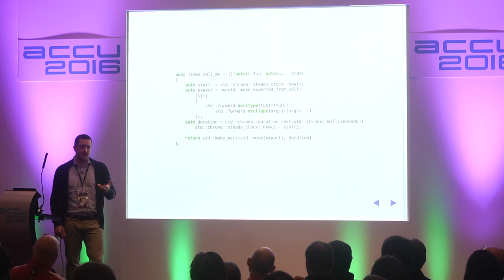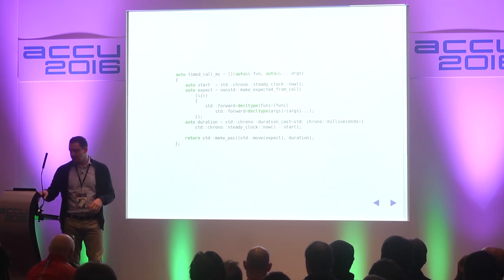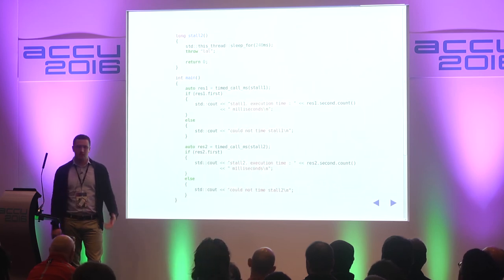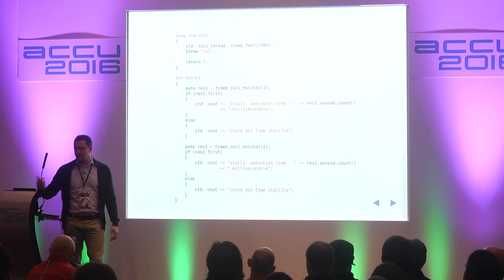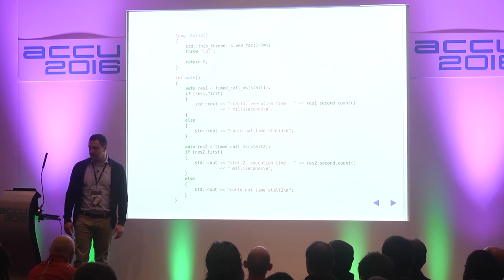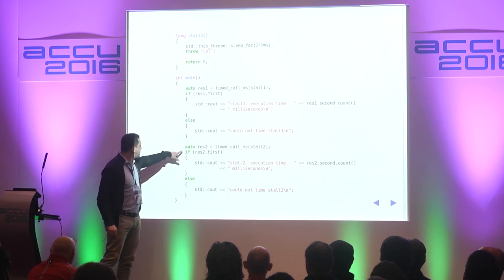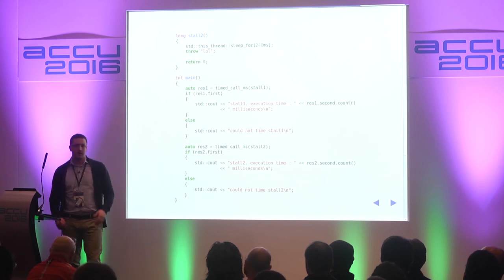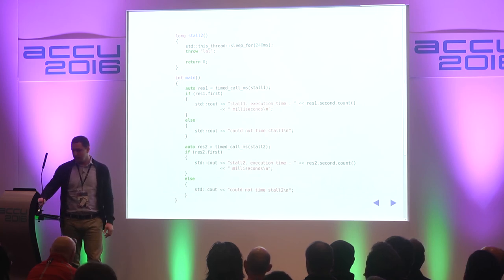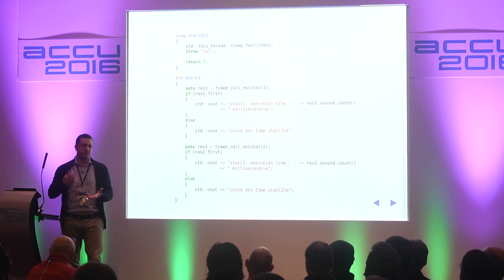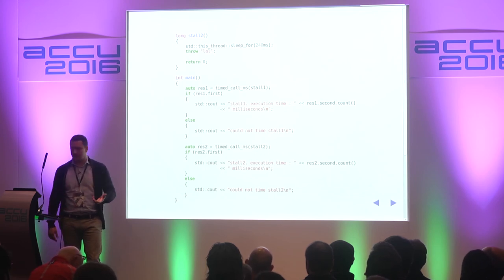What we return from such a function is a pair: the expected return type T as the first member, and a duration as the second. For example, defining a stall2 function that throws an exception — when calling stall2, the exception will be encapsulated in the expected type, so the error branch will run printing 'could not time'. In a benchmarking framework, you would have a method to log these things into some error state and track these executions.